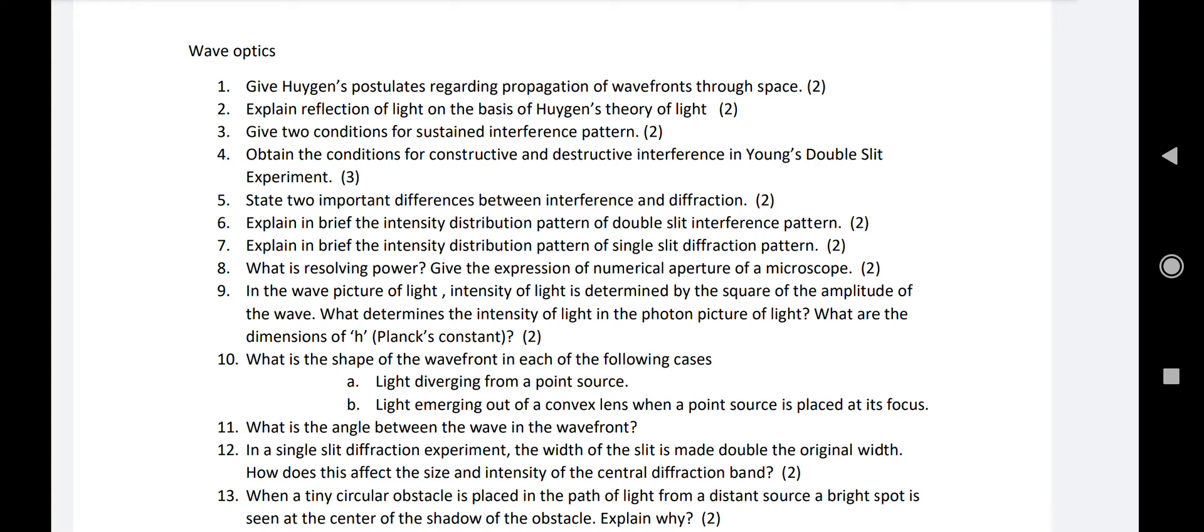Then number 4: Obtain the condition for constructive and destructive interference in YDSE, meaning Young's double slit experiment. Path difference even multiple of lambda by 2, odd multiple of lambda by 2. Maxima are even, minima are odd multiple of lambda by 2. This is from the theory of interference exactly.